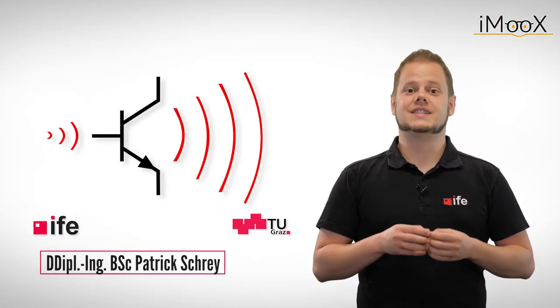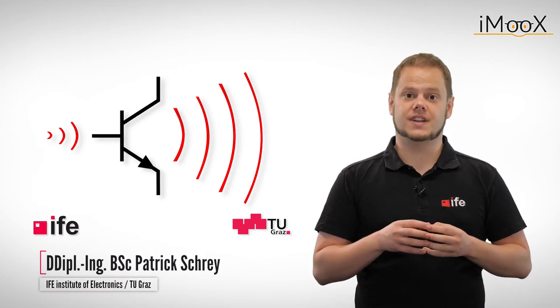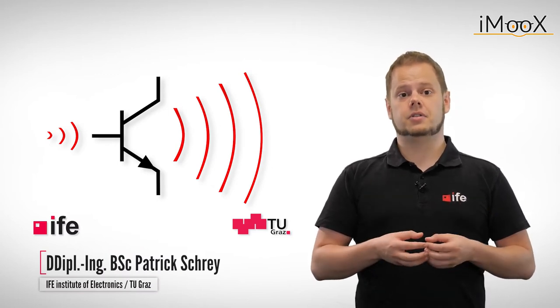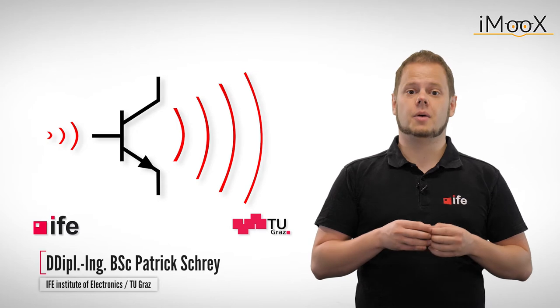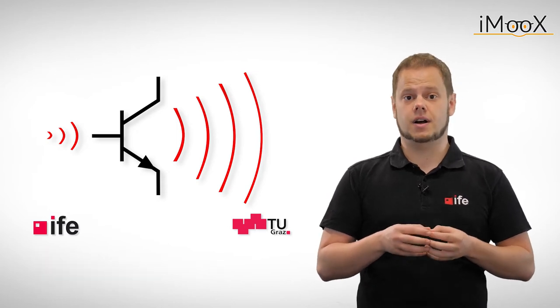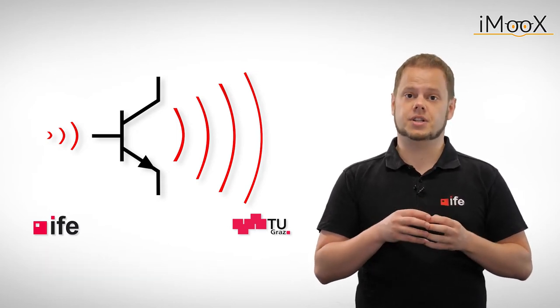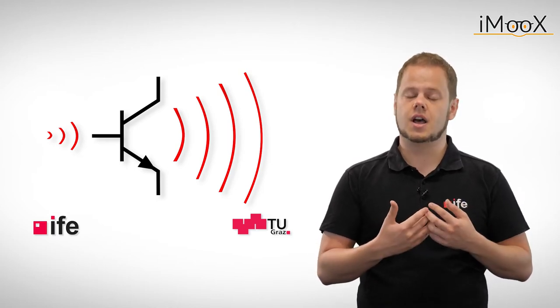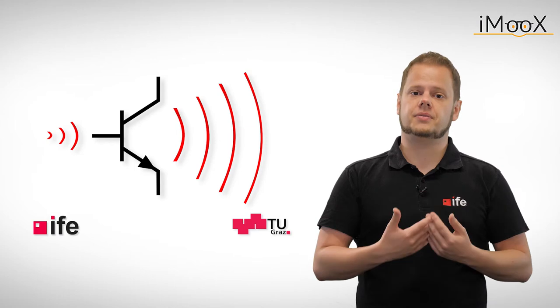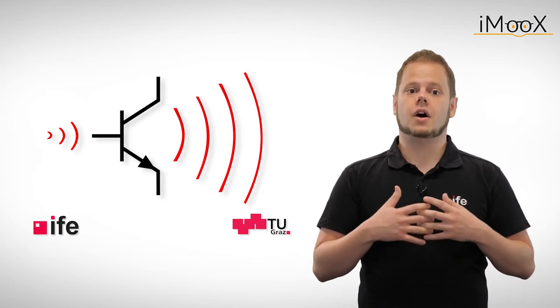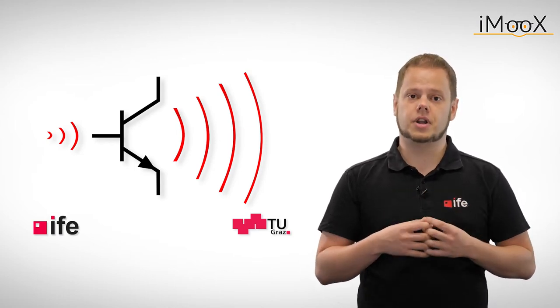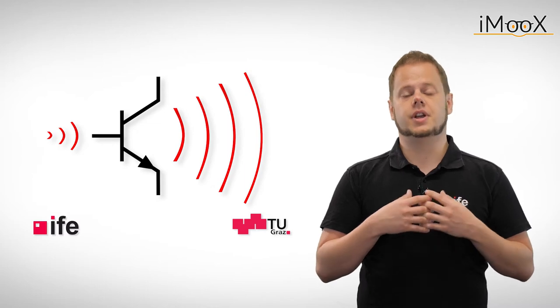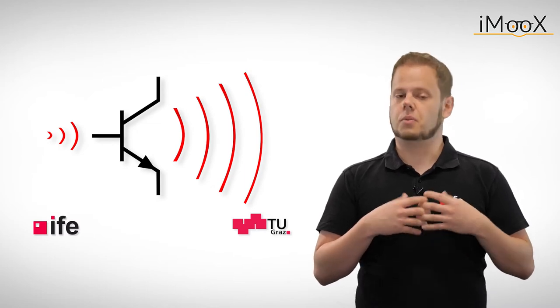The operational amplifier is the Swiss army knife of analog circuit design. Named for the mathematical operations they are able to implement, operational amplifiers are an essential part in many different applications like power supplies, sensor interfaces, and data transmission. But before we dive headfirst into our first example on how to realize mathematical operations with electronics, we take a closer look at the basics of operational amplifiers.